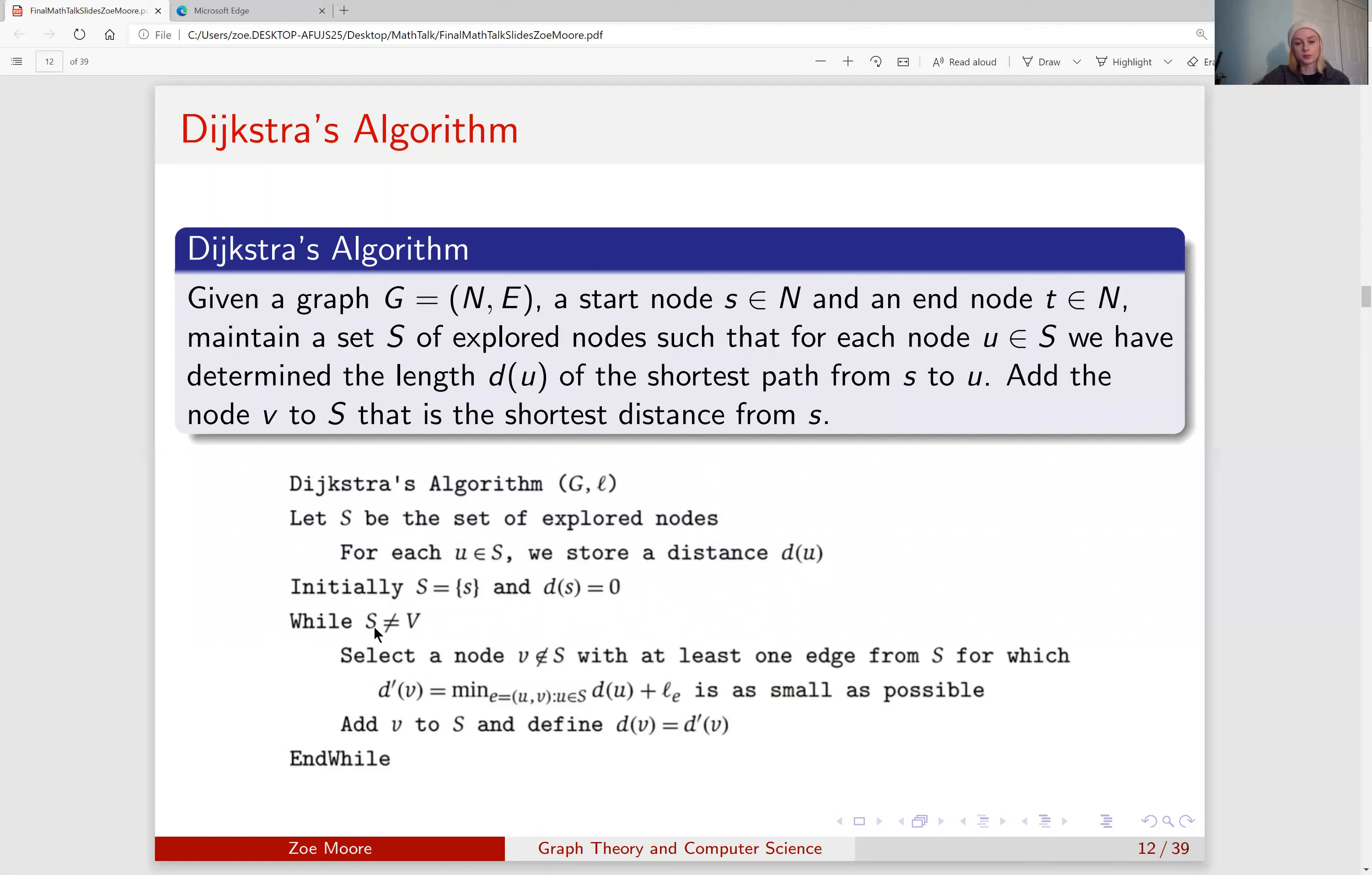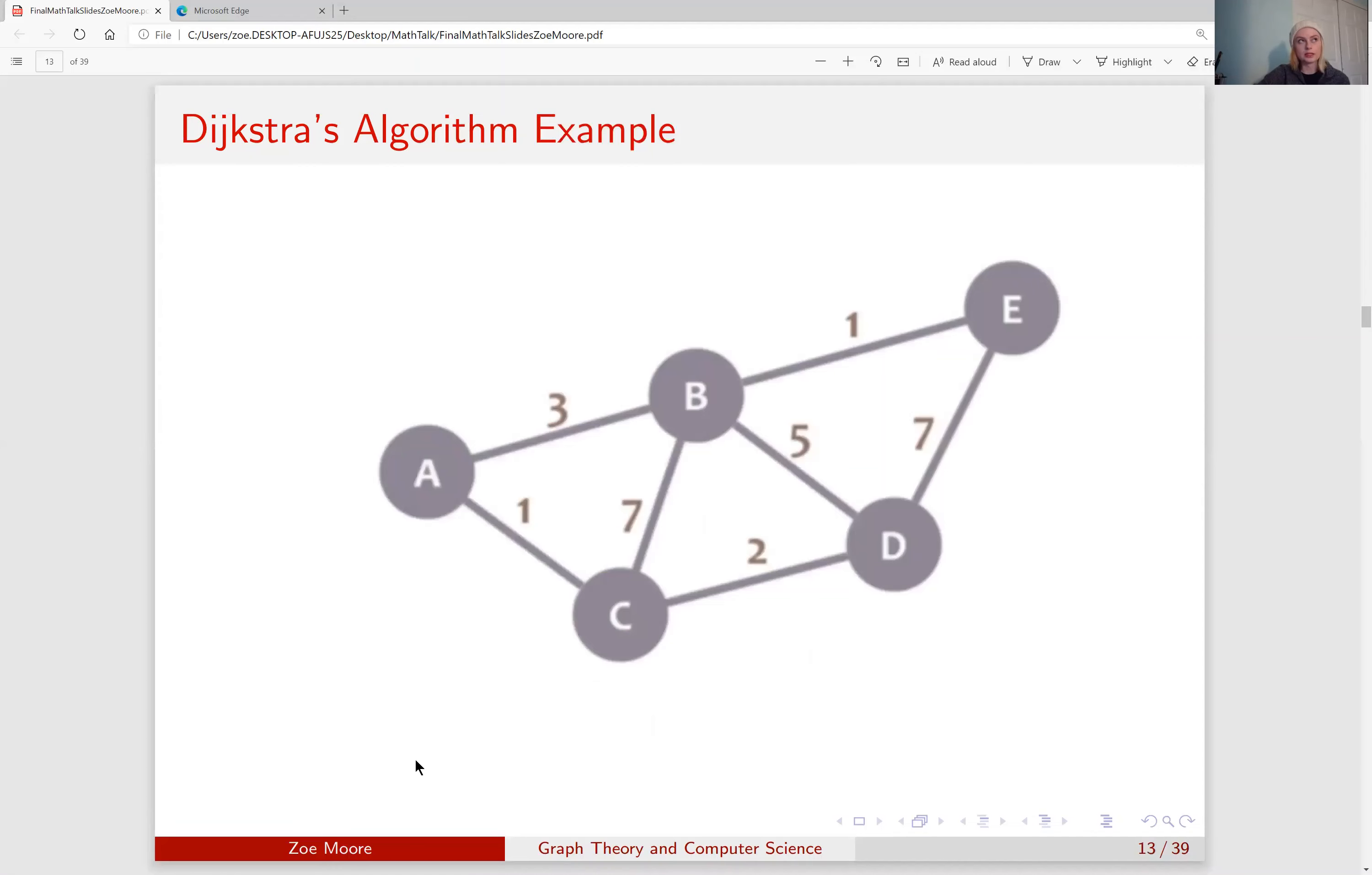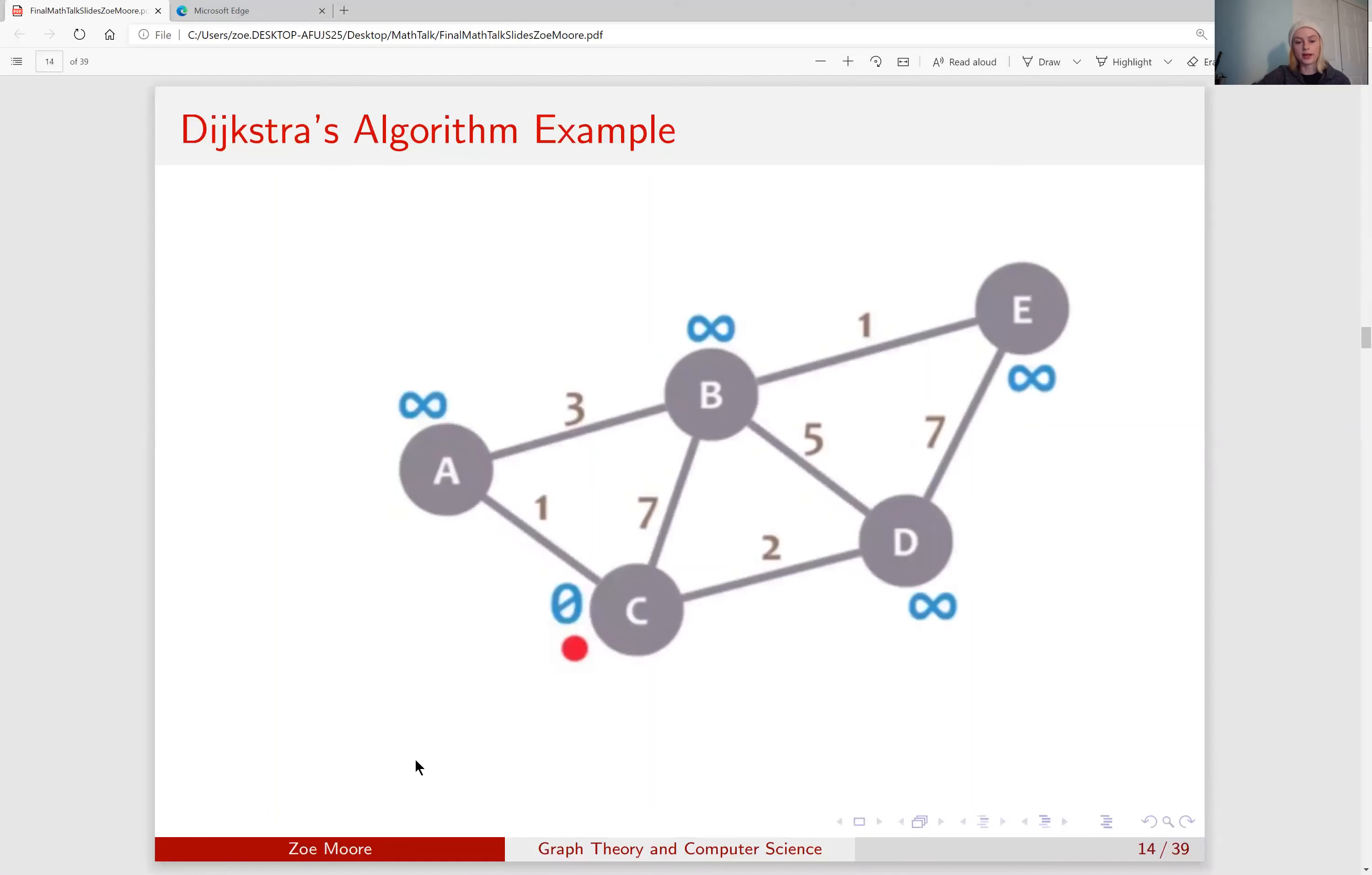And while our set of explored nodes S does not equal the set of all nodes, we will select a new node that is not yet in S and has at least one edge connecting it to S, and we will maintain the distance and record the smallest distance until we have gone through every node in our graph. This can be best understood through an example, so we will use this graph here and start at C.